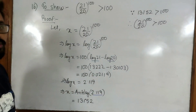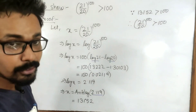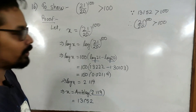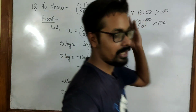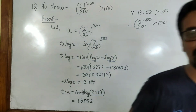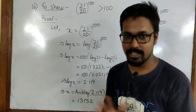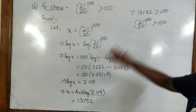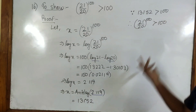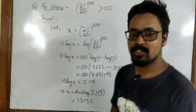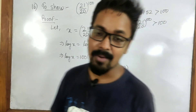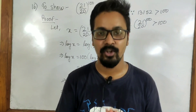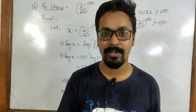It looks like an inequality sum but it is not that tough — nothing complex about inequality here. Very simple: find the value of the LHS, show that it is greater than 100. So that brings us to the end of chapter 5, Logarithm, of class 10 advanced mathematics.